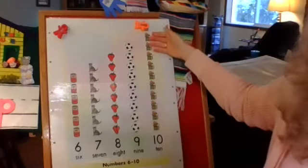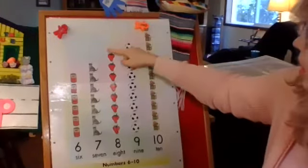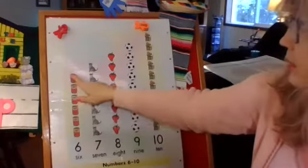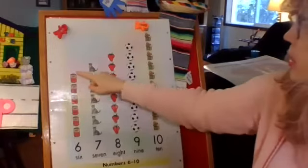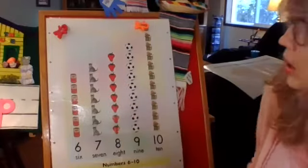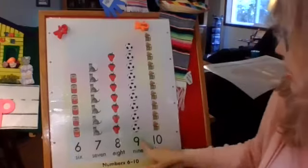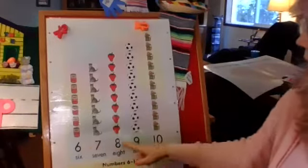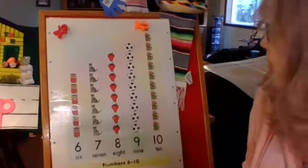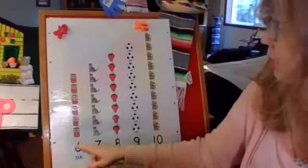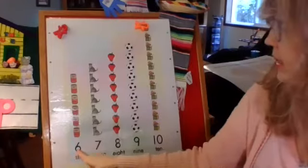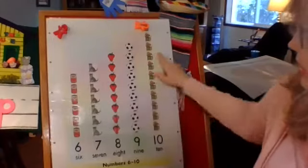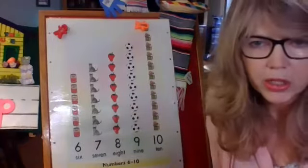You can just look at this graph and see which object group had more. There are more Jack in the boxes — I can see that this column is taller than all the others. Which object group had the least? I can see with my eyes that this column is shorter — the soup cans had the least amount. You could also read this graph by looking at the numbers. 10 is the most, and the group with 6 had the least.